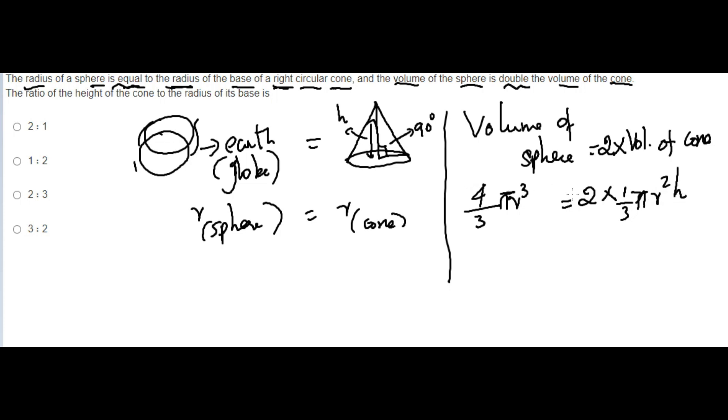Now make the cancellation: two cancels to make it two, three and three cancel, π and π cancel, r² cancels completely leaving one r.